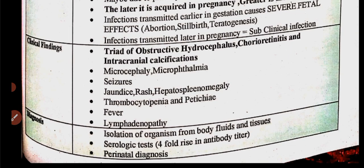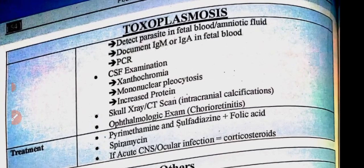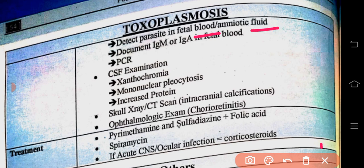For diagnosis: serological tests will show a rise in antibody titer; perinatal diagnosis can be done by examining fetal blood or amniotic fluid for the parasite, or by detecting IgM/IgE antibodies or PCR. CSF examination shows xanthochromia, pleocytosis, and elevated protein. CT skull/X-ray will show intracranial calcifications. Ophthalmology will reveal chorioretinitis.